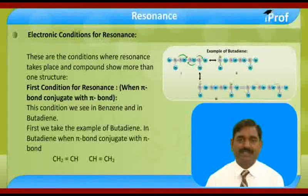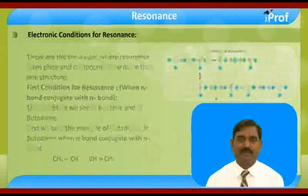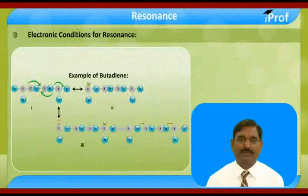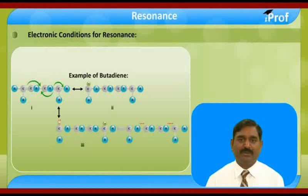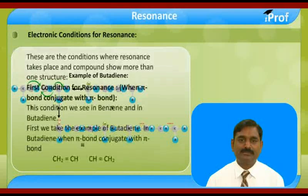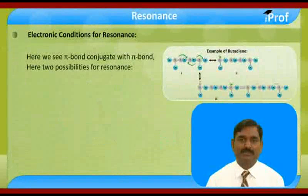First, we take the example of butadiene. In butadiene, when pi bond coincides with pi bond, the structure is CH2=CH–CH=CH2. Here we can see that the pi bond coincides with the pi bond.